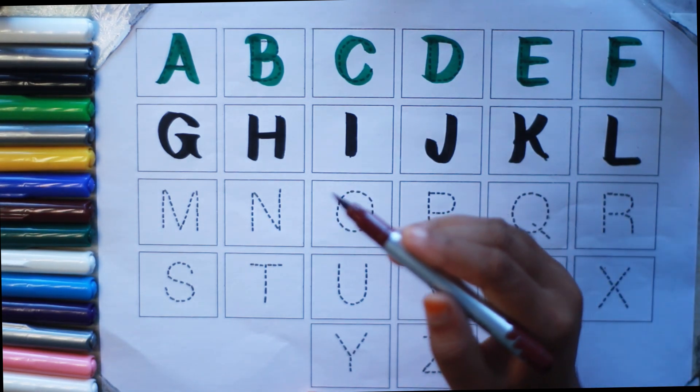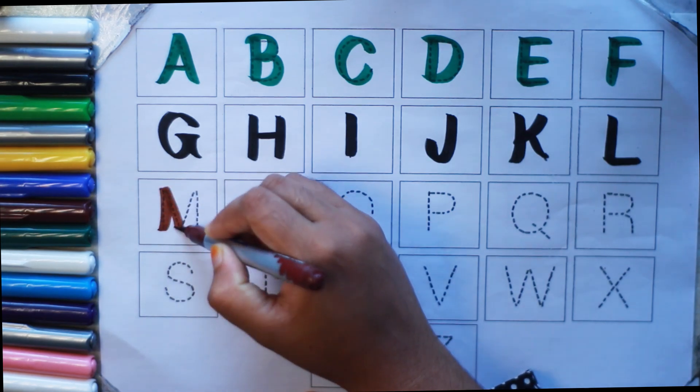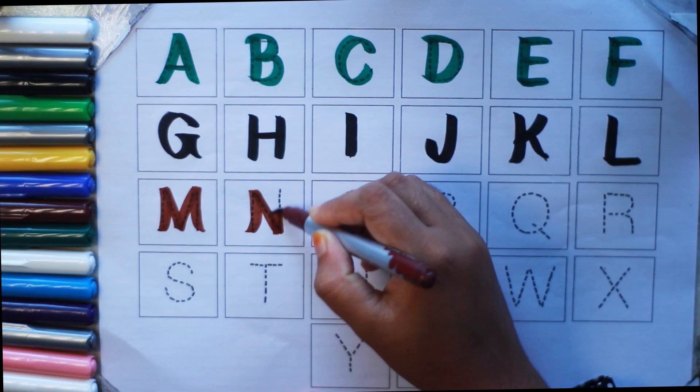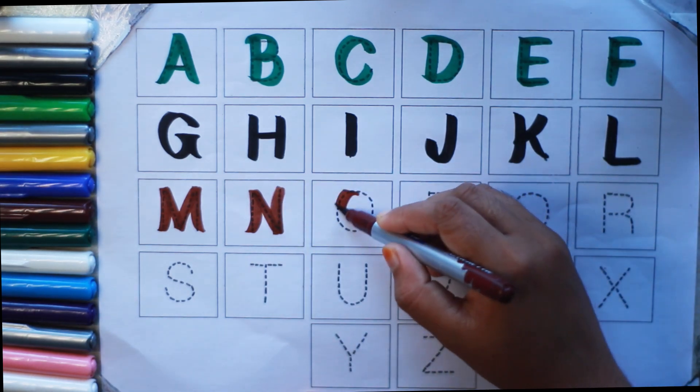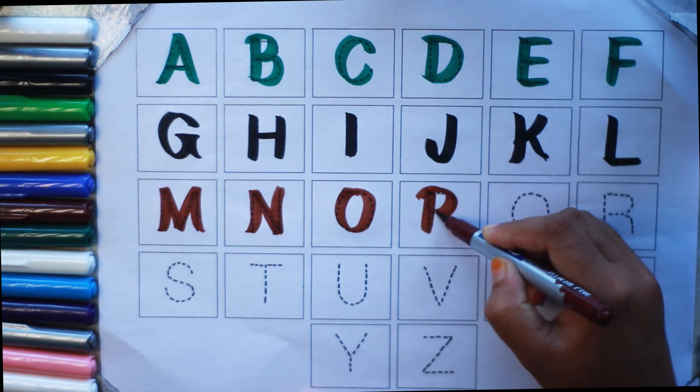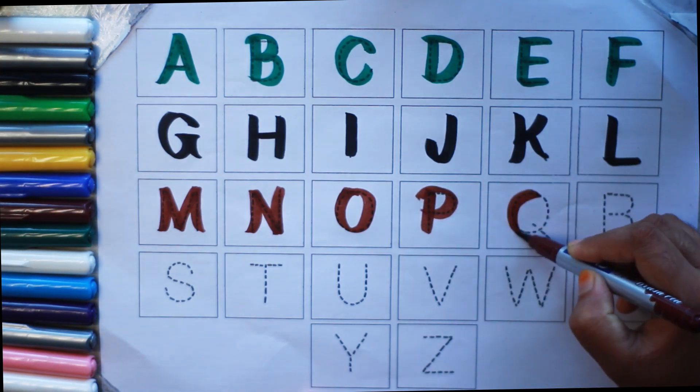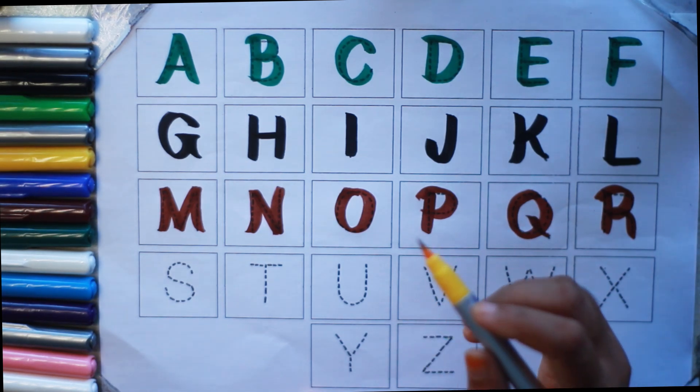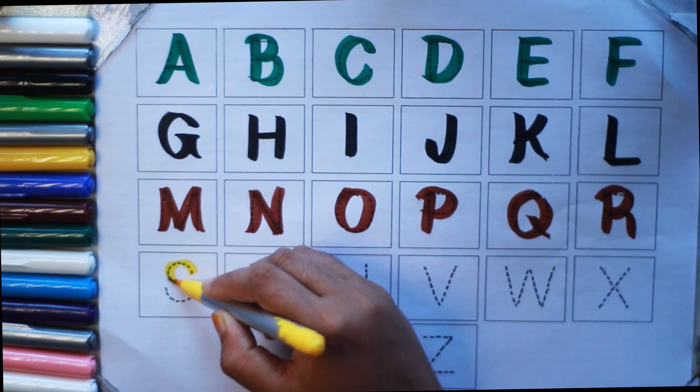Brown color: M M for monkey, N N for nest, O O for ox, P P for parrot, Q Q for whale, R R for rabbit. Now I know my ABC. Yellow color: S S for snake.